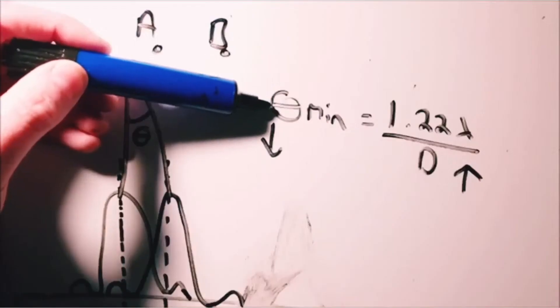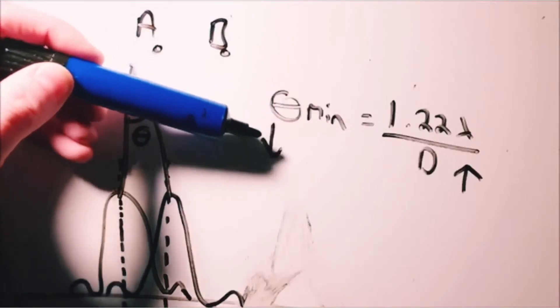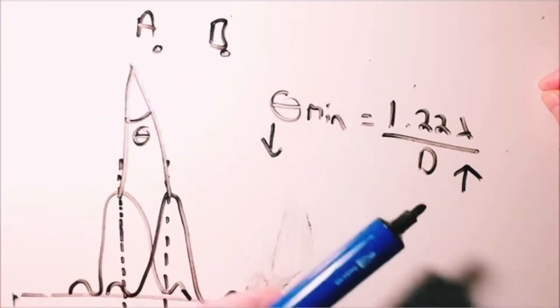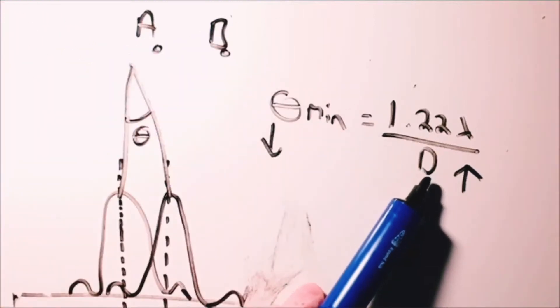And what that means is I can resolve two objects that are close together better. I have a better resolution. I'm going to get a better picture from the same distance if I have a bigger lens. And we know that.